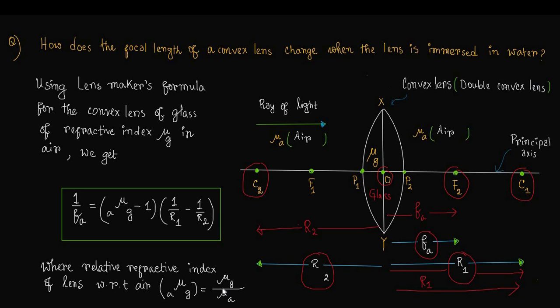So a_mu_g = mu_g / mu_a, where mu_g is the refractive index of glass and mu_a is the refractive index of air, the surrounding medium of the lens.